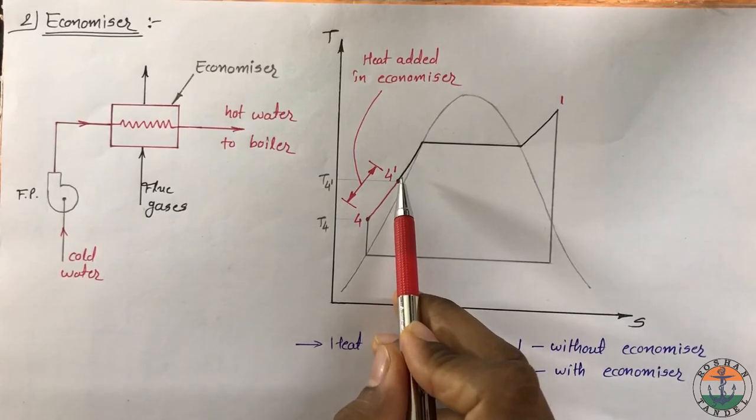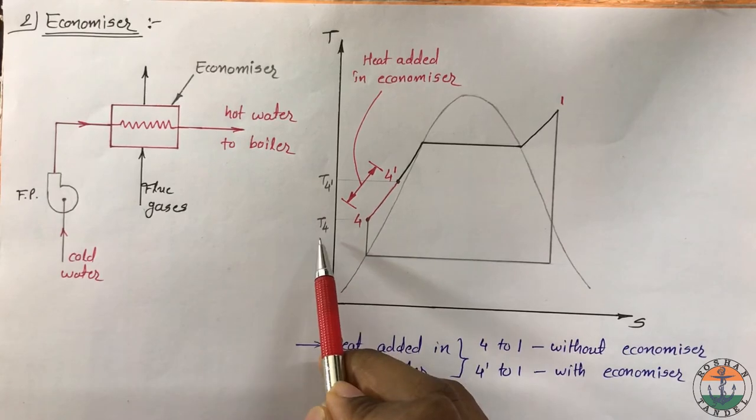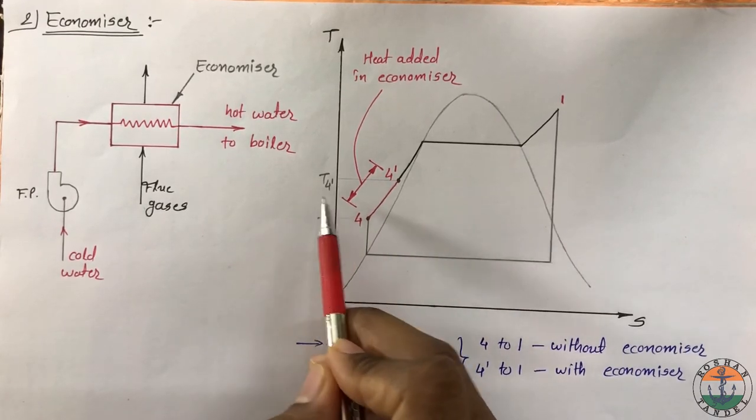4 to 4 dash is the heat addition in economizer, so temperature of feed water increases from T4 to T4 dash.